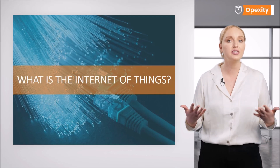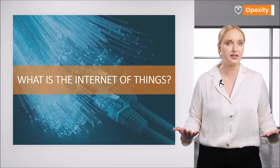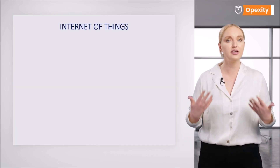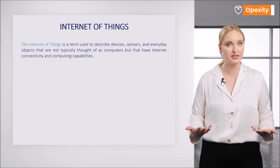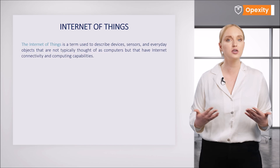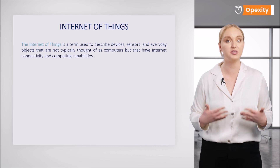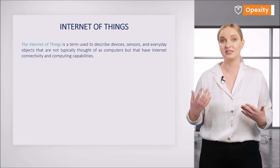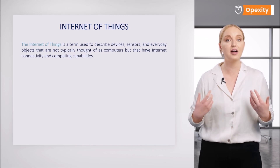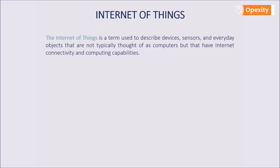What is the Internet of Things? The Internet of Things is a term used to describe devices, sensors, and everyday objects that are not typically thought of as computers, but that have internet connectivity and computing capabilities.